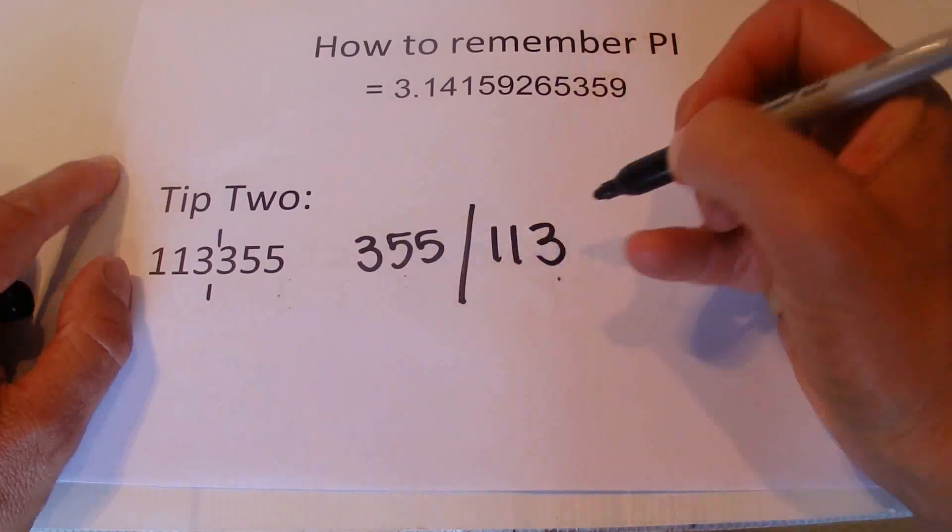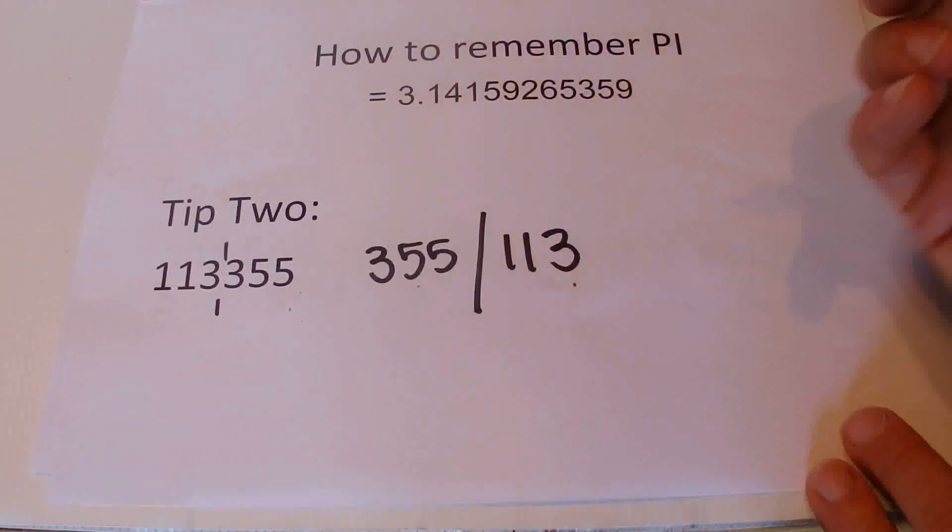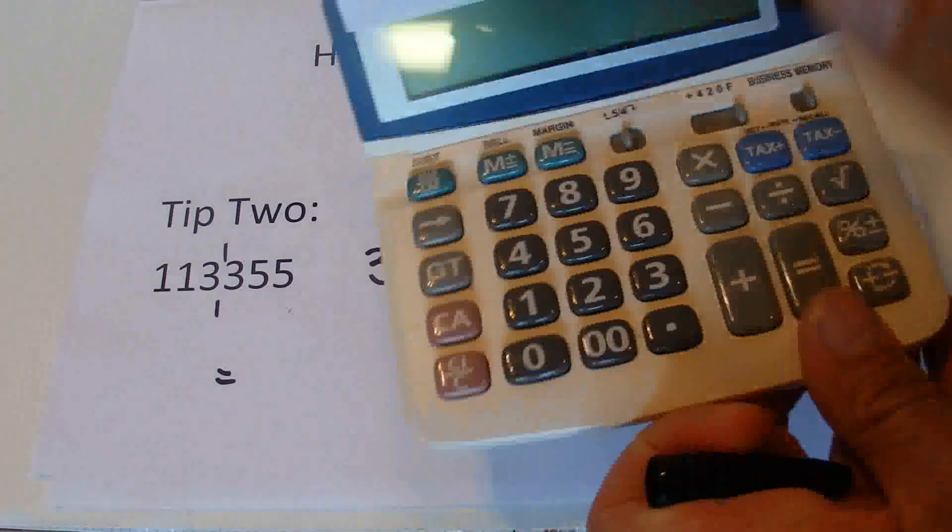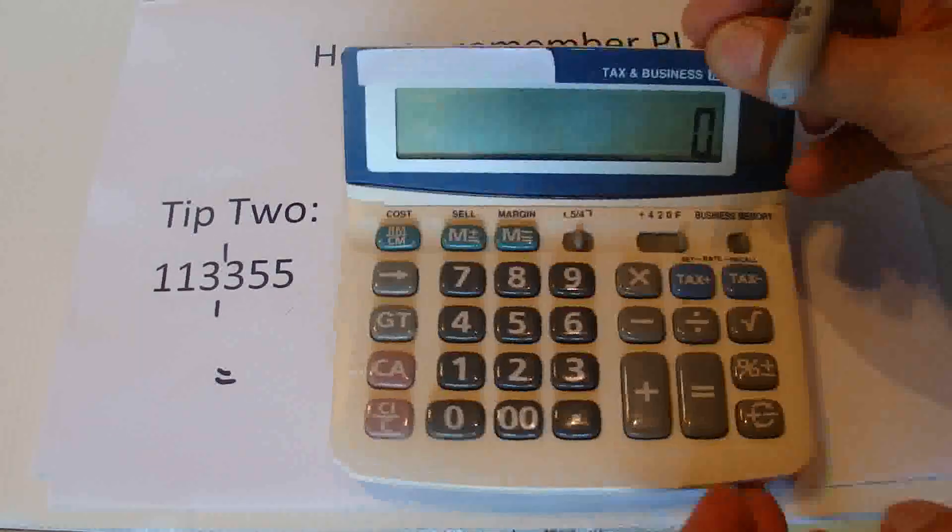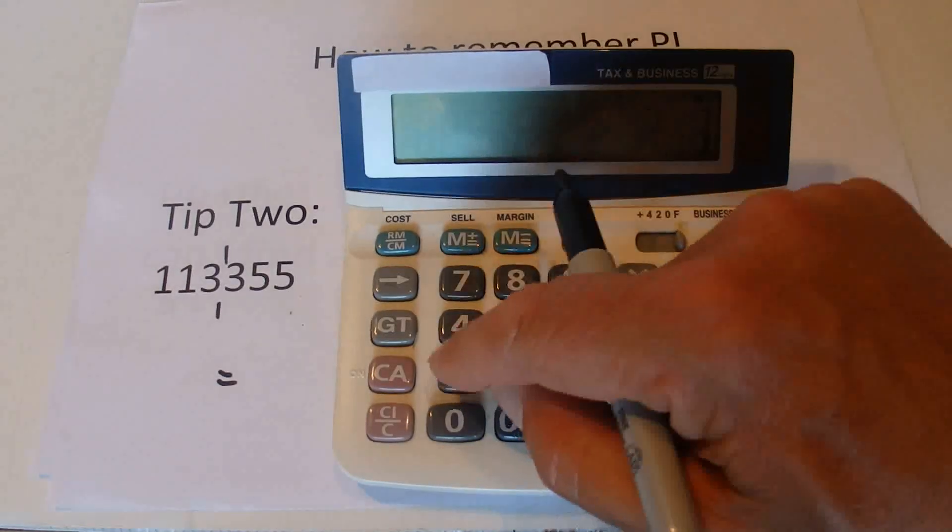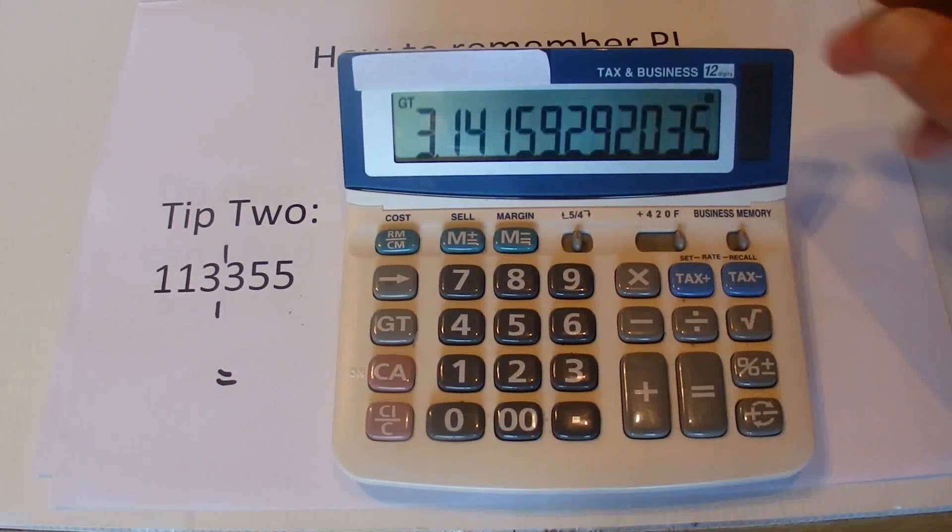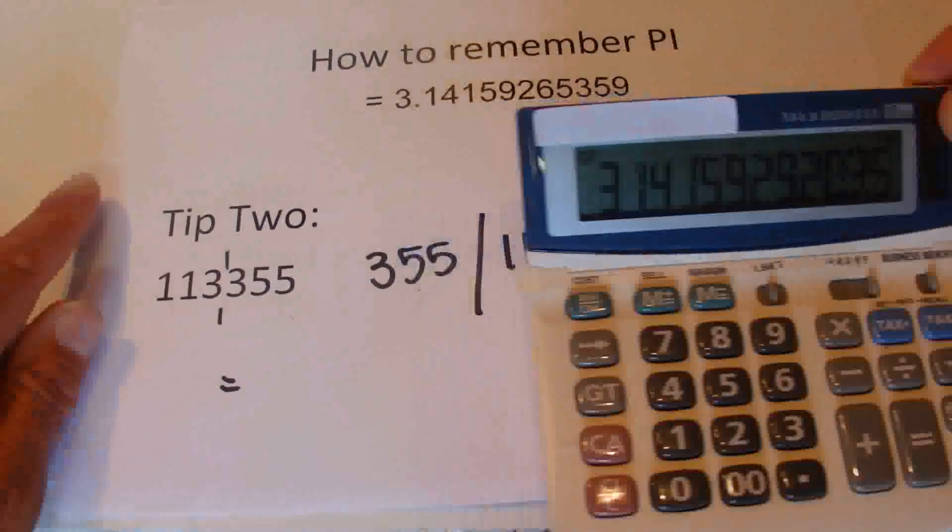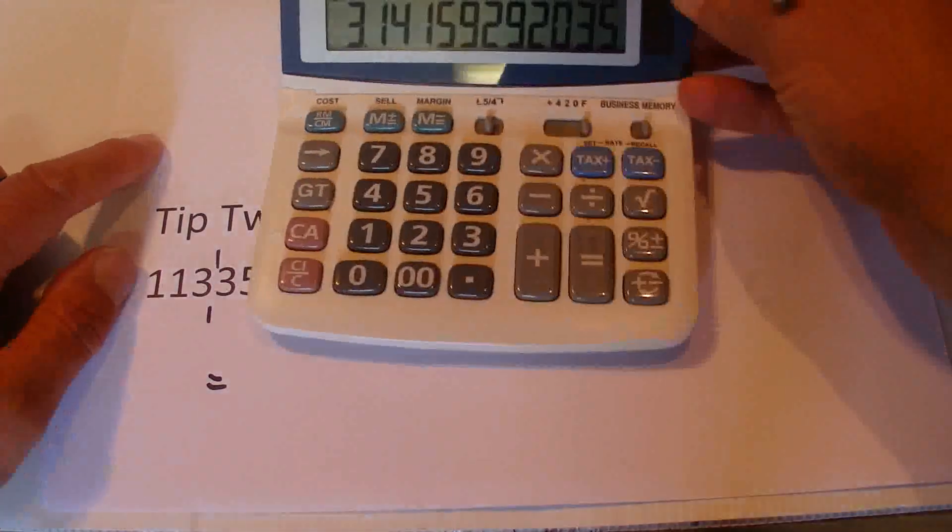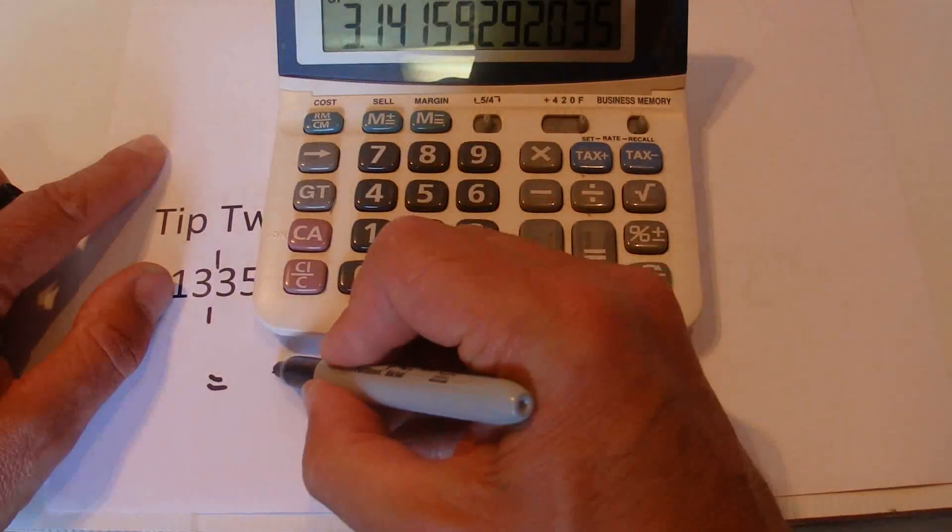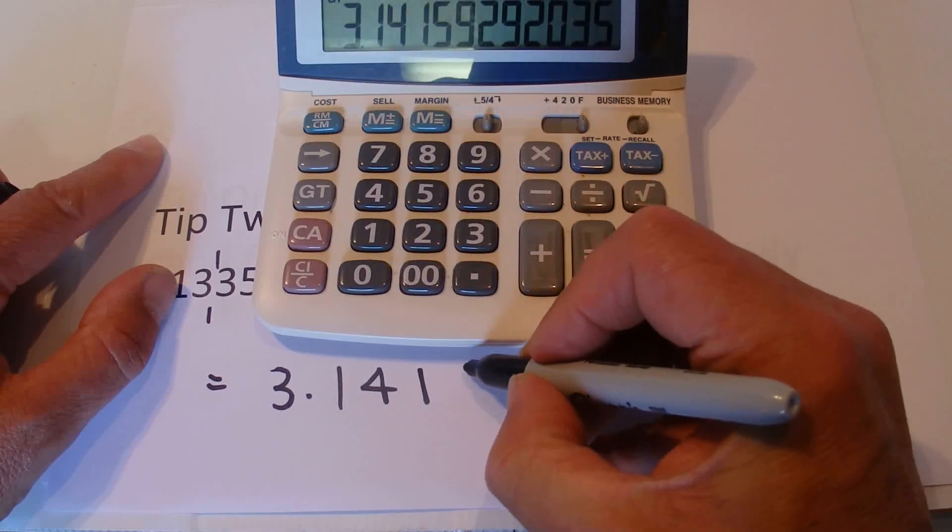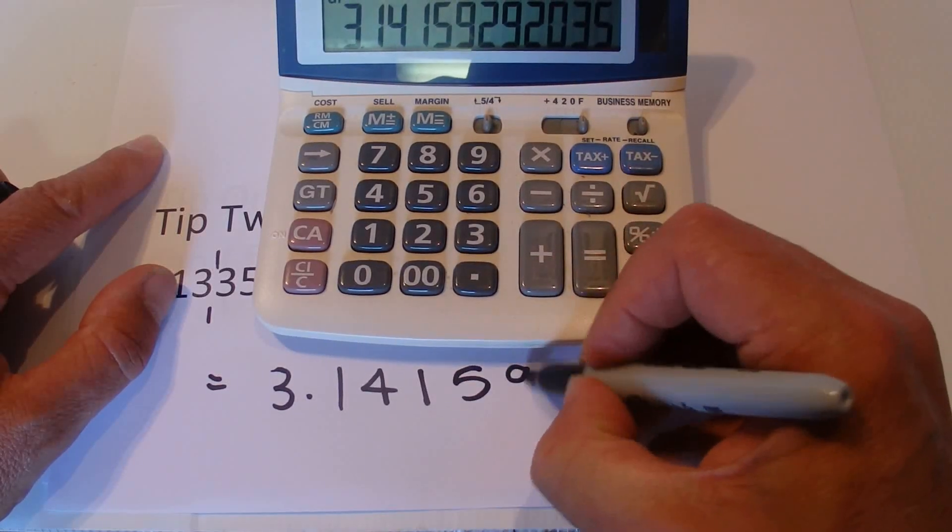Then all you need to do is get your trusty calculator out, put in 355, and divide that by 113. There we go, that's a good estimation of pi which is 3.141592.